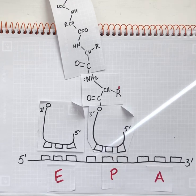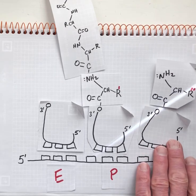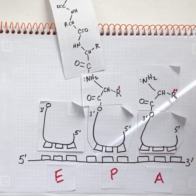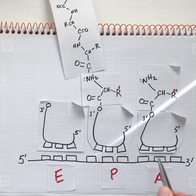Now we bring in a new tRNA attached to potentially a different amino acid, and it makes a match between anticodon and codon.